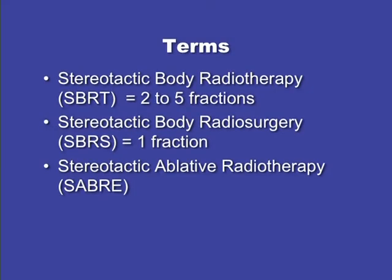A couple of terms: stereotactic body radiotherapy generally means two to five fractions, while stereotactic body radiosurgery by most people's definition is one fraction — surgery gets the designation for one fraction. Timmerman has proposed the term SABR — stereotactic ablative radiotherapy — to combine both. There are multiple different devices to do this, and there are pluses and minuses to all of them: we use a LINAC-based system, specifically the Synergy S; there's CyberKnife, which is a robotic arm with a linear accelerator delivering precise radiation beams from multiple nodes; Novalis; and tomotherapy.